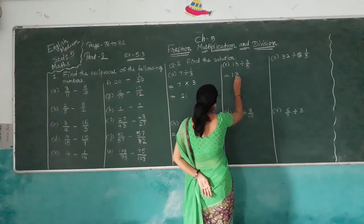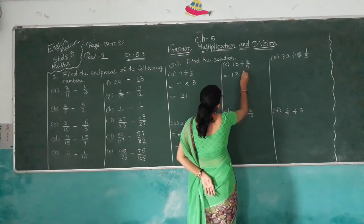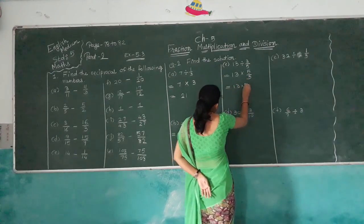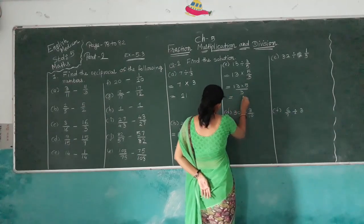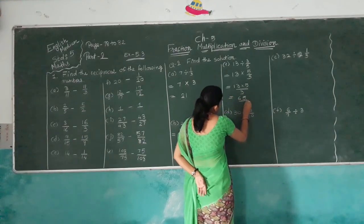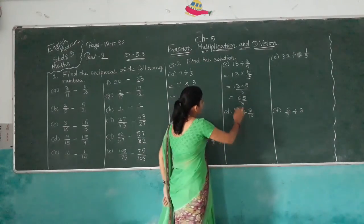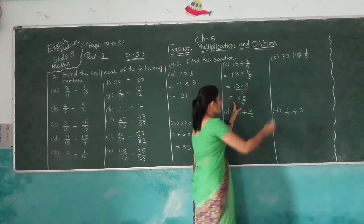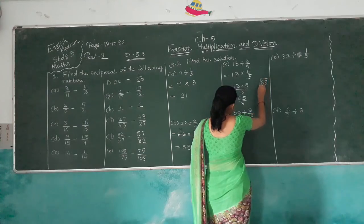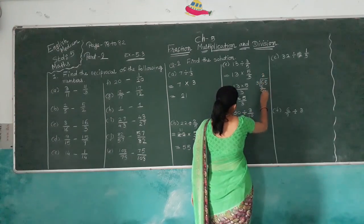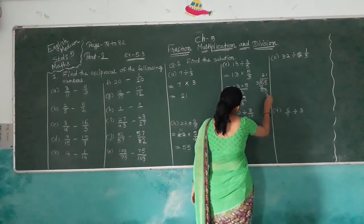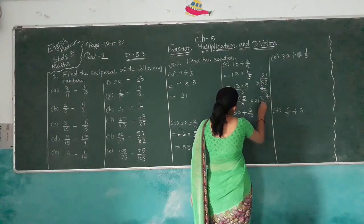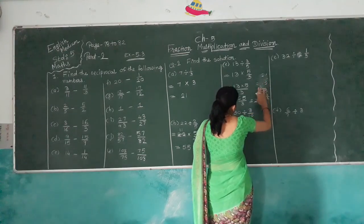Next: 13 divided by 3/5. The reciprocal of 3/5 is 5/3. So 13 multiplied by 5/3 equals 65/3. This fraction is improper, so we convert it: 65 divided by 3 gives 21 remainder 2, so the answer is 21 and 2/3.